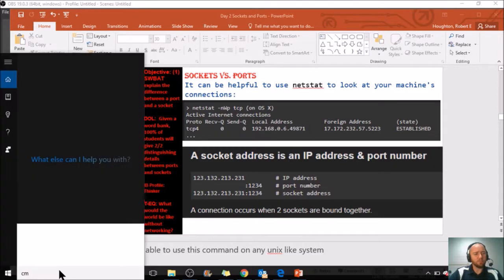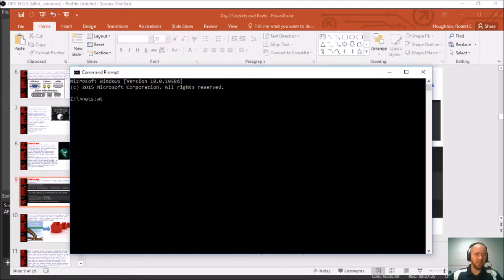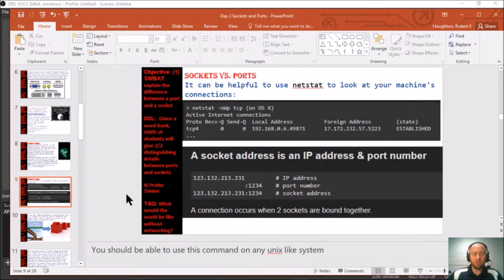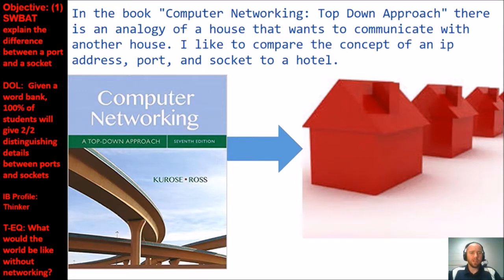Let's try that: open CMD, hit enter, type NETSTAT and push enter to get a lot of information. This works on Windows; if you have a Linux machine, open the terminal and use the exact same command. For further learning, I'd suggest the book 'Computer Networking: A Top-Down Approach,' which has a great analogy about a house communicating with another house. I like comparing the concept of IP address, port, and socket to a hotel.